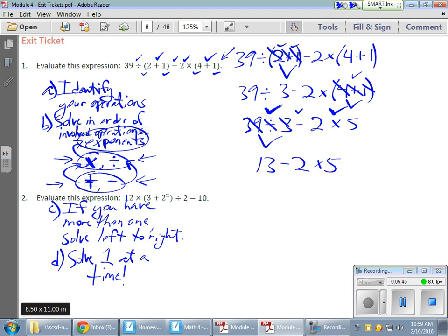Now I'm left with subtraction and multiplication. Now my multiplication has a higher authority than my subtraction. It's more involved. Subtraction is a very simplistic operation. 2 times 5 gives me 10. I'm done with that. Here's my 13 minus 10 gives me 3. And that's the deal.